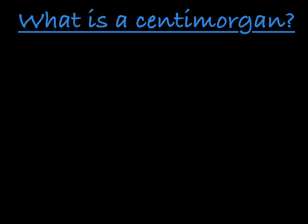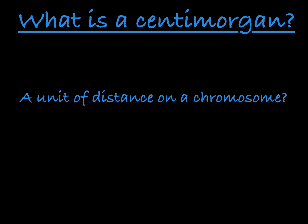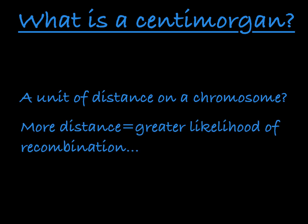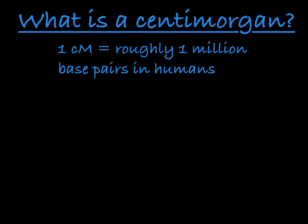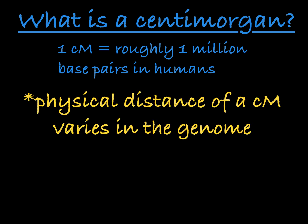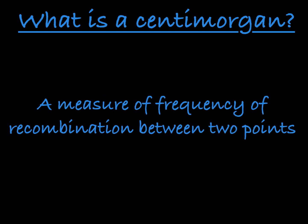You might think that a centimorgan is a unit of distance on a chromosome, and that the greater the distance between two positions, the more likely recombination will occur. This is not wholly true. While one centimorgan corresponds to roughly one million base pairs in humans, the relationship is not set in stone, and the physical distance of a centimorgan varies from one location to the next on a genome. The best way to think of a centimorgan is as a measure of frequency of recombination rather than a physical distance, realizing that, in general, the greater the distance between two positions, the more likely recombination will take place.